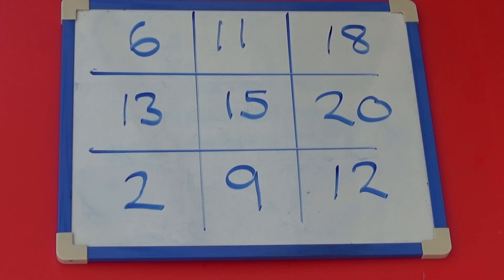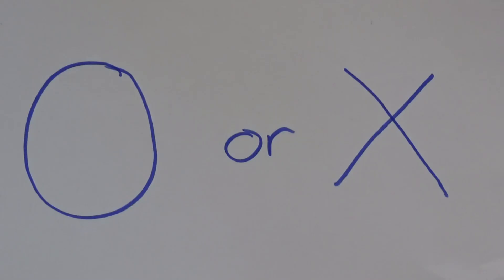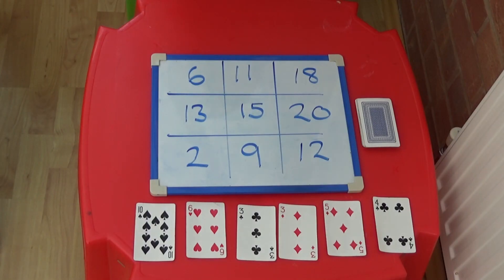Before you start you need to decide who is going first. You also need to decide who is going to be Noughts and who is going to be Crosses. For this game I'm going to be Noughts. Each player takes 6 cards from the pack of cards and lays them out in front of them.